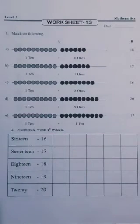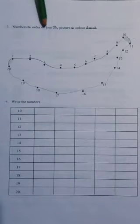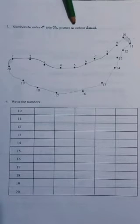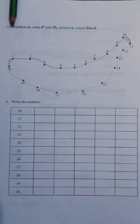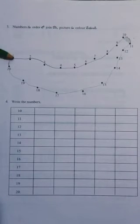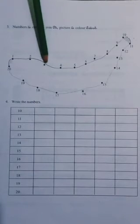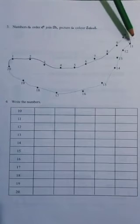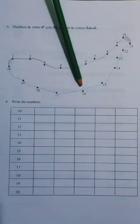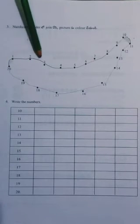The numbers are the colors. Numbers are the order join. The pictures are colors. The numbers are the order join. The picture is the color. The numbers are the order. 1, 2, 3, 4, 5, 6, 7, 8, 9, 10, 11, 12, 13, 14, 15, 16, 17, 18, 19, 20. So, in numbers, in order, join.